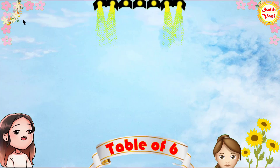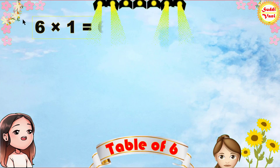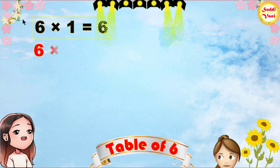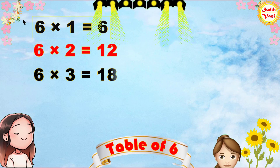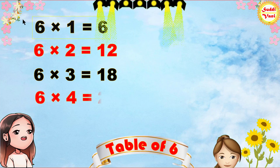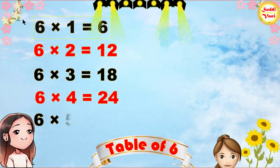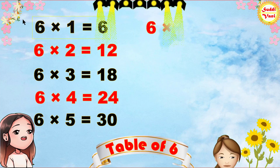Once again: 6 1s are 6, 6 2s are 12, 6 3s are 18, 6 4s are 24, 6 5s are 30.